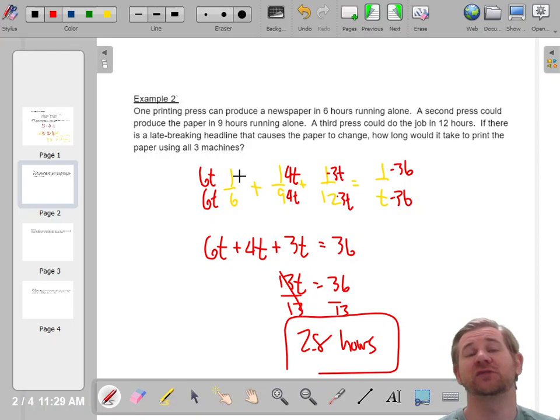So the fastest machine is six hours, but if you work with the two slower machines, you can get it down to two point eight hours, which is nice. Let's do another one.